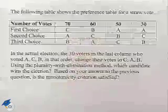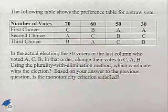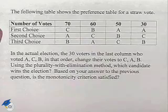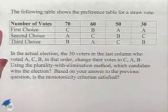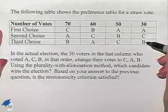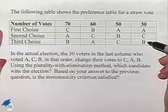Now we're going to look at the same preference table again, only this time there will be some changes. The following table shows the preference table for a straw vote. In the actual election, the 30 voters in the last column who voted A, C, B in that order changed their votes to C, A, B.